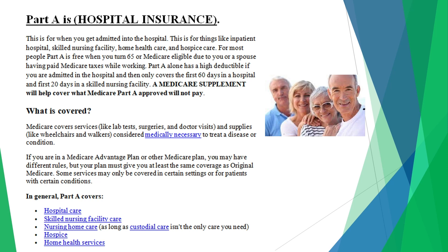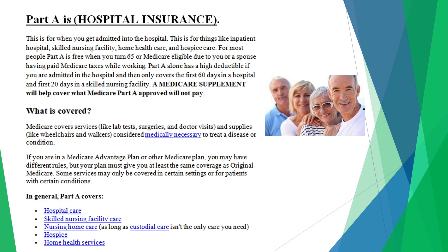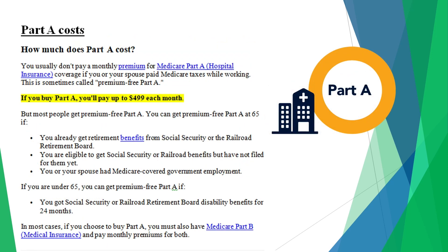Medicare also covers services like lab work, surgeries, and doctor visits under Part B, along with medical supplies — durable medical equipment — considered medically necessary for certain diseases and conditions. If you're in a Medicare Advantage plan or other Medicare plans, your plan will give you at least the same coverage as original Medicare — it has to be as good as or better than Medicare. Usually you don't pay for Part A as long as you worked 10 years and paid taxes. If you have less than 40 quarters, you will have to pay for Part A — the average cost is $499 for 2022. But most people do get it free.